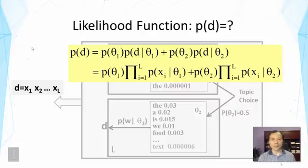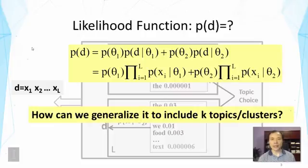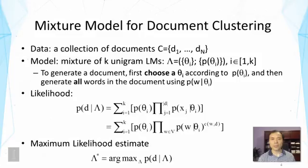Now in this lecture, we're going to generalize this to include K clusters. Now if you look at the formula and think about the question of how to generalize it, you will realize that all we need is to add more terms like what you have seen here. So you can just add more thetas and the probabilities of thetas and the probabilities of generating d from those thetas. So this is precisely what we are going to use. And this is the general presentation of the mixture model for document clustering.